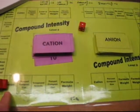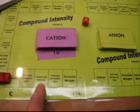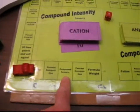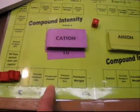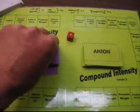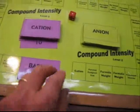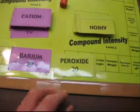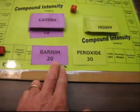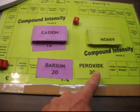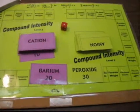In level one of the game, another space that they'll find is one that just says compound formula. In order to write a compound, obviously they'll need a cation and an anion card. Let's say this team landed on compound formula, and the cards that they picked would be barium peroxide. They'll reveal this to all players in the game.